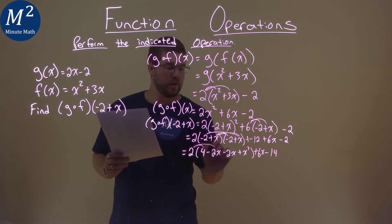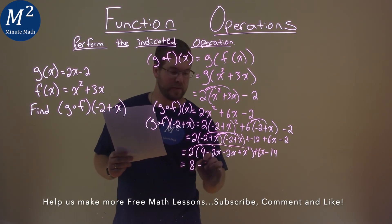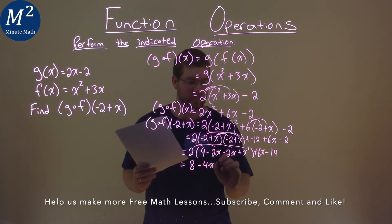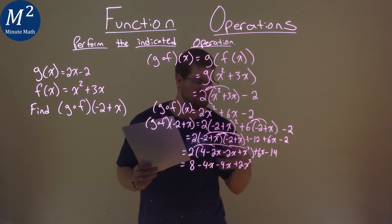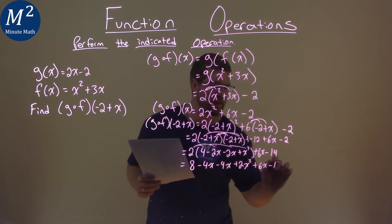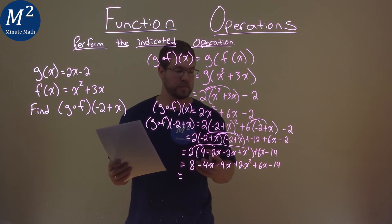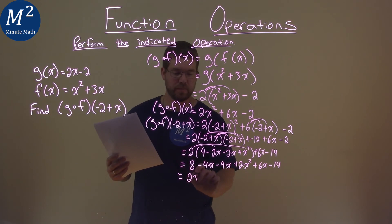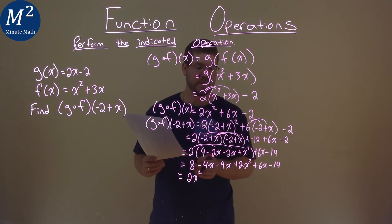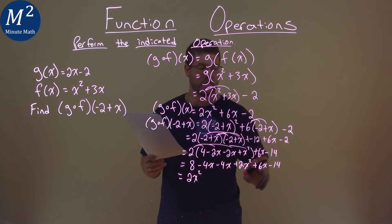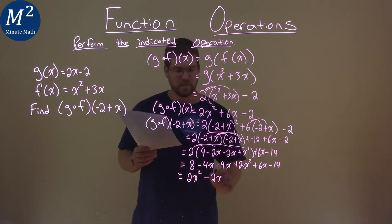We can't forget to distribute this 2 to all parts. So 2 times 4 is an 8. 2 times a negative 2x is a negative 4x. And 2 times a negative 2x is a negative 4x again. And 2 times x squared is a 2x squared. Then we plus a 6x and minus 14 here. So now let's combine our like terms and reorder this. We only have one x squared value, that's a 2x squared. Then we add our negative 4x, negative 4x, and our positive 6x. Negative 4x plus negative 4x is a negative 8x. Plus 6x is a negative 2x. Then we have an 8 and a negative 14, which come together to be a negative 6.